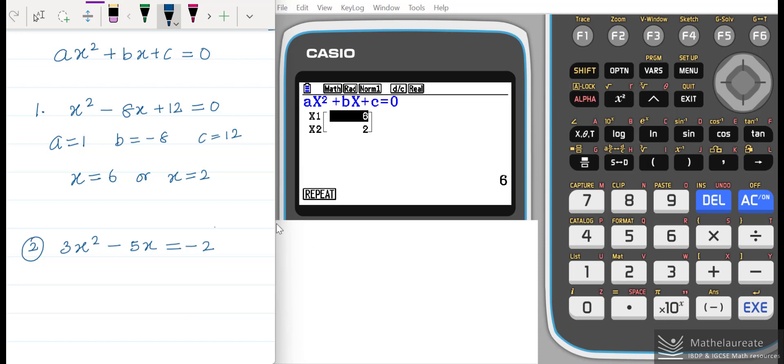Look at the second example here. You need to solve 3x squared minus 5x equal to negative 2. This is not in the standard form of ax squared plus bx plus c equal to 0.